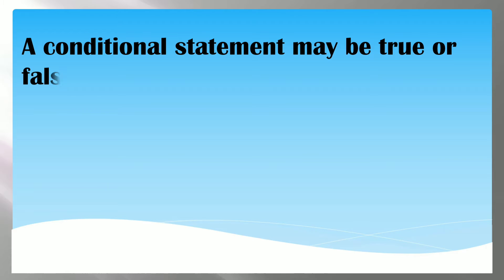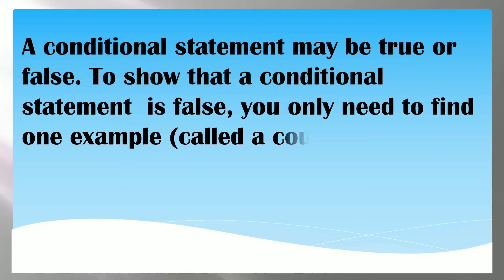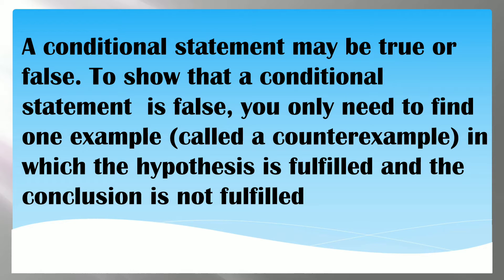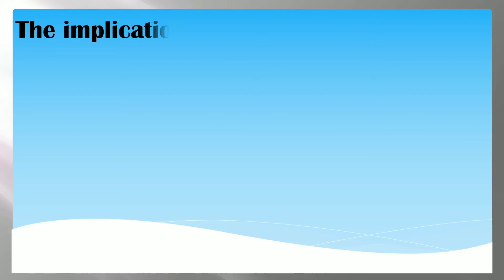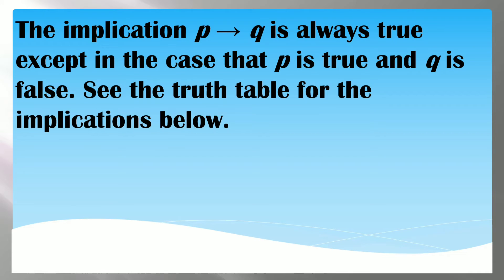A conditional statement may be true or false. To show that a conditional statement is false, you only need to find one example — called a counterexample — in which the hypothesis is fulfilled and the conclusion is not fulfilled. The implication P then Q is always true except when P is true and Q is false.